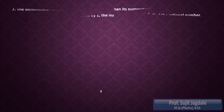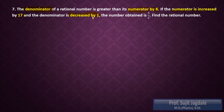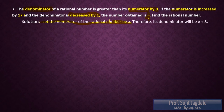The next example is: the denominator of a rational number is greater than its numerator by 8. So the condition for the denominator is given — it is greater than the numerator by 8. If the numerator is increased by 17 and the denominator is decreased by 1, their ratio becomes 3 upon 2. We have to find that rational number. Let the numerator be x; therefore its denominator is x plus 8.